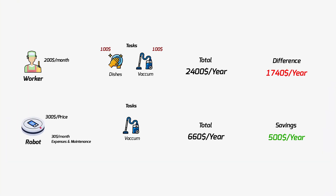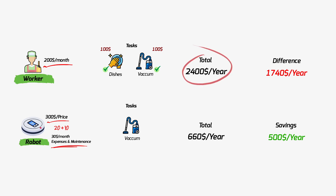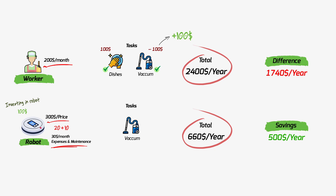Let's break this concept into simple mathematics and some business jargons. Suppose a worker takes $200 for cleaning dishes and performing vacuuming. The robot price is $300, $20 for electricity and charging, and $10 per month for repairs. So the worker costs $2,400 per year and the robot costs $660 per year — a difference of $1,740. Since the worker also does dishes, $100 of that $200 goes to vacuuming. You invest $100 back into your robot, saving roughly $500 in the first year.